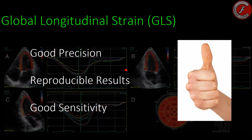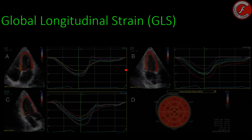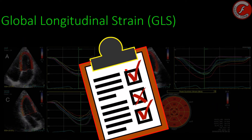Thus, we can say that the global longitudinal strain is a precise and reproducible technique capable of identifying alterations of the heart function before changes in other parameters such as the ejection fraction even existed, because the ejection fraction shows the chamber function, while the strain evaluates the function of the fiber. This is why the global longitudinal strain has been turning, step by step, into a truly helpful parameter in certain clinical scenarios.